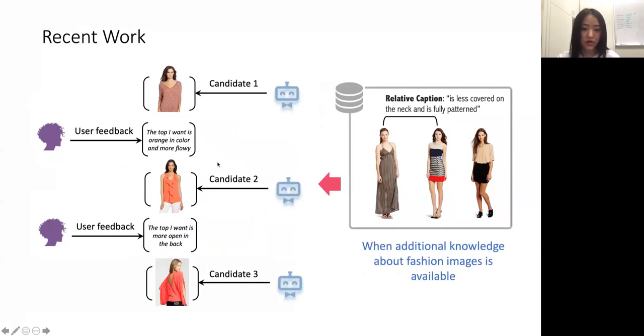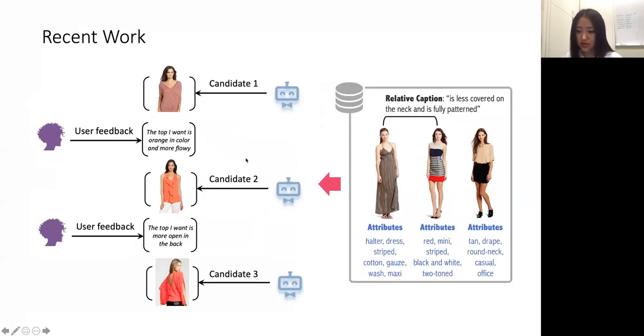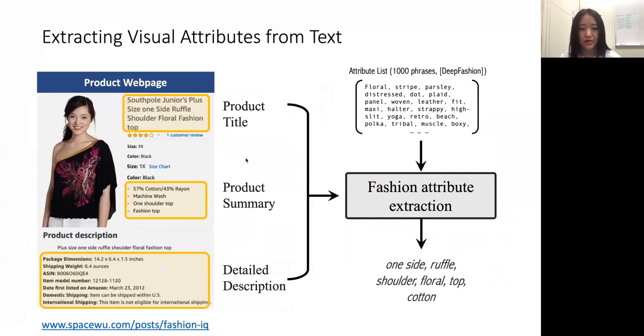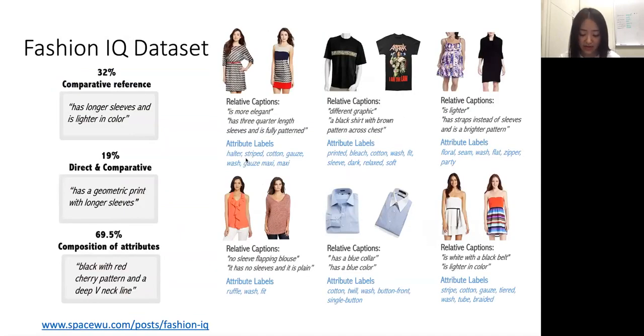One of the directions we took is to actually study how can we improve the performance with additional knowledge about the images that can be available to us. Remember in our first work, all the supervision came from users' feedback. But in many situations, for example in fashion domain, there is other side information that could be incorporated to help with learning. Inspired by this, we actually leveraged visual attributes from text. Specifically for Amazon product images, we scraped their website and obtained text metadata from the website. We used a list of attributes to filter and obtain fashion-related labels. We augment the relative image caption dataset with these attribute labels and presented a new dataset, FashionIQ.